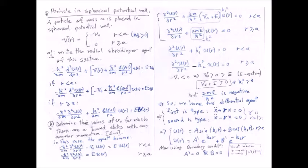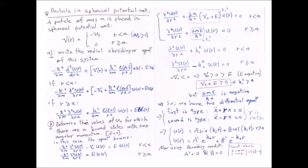For l = 0, the Schrödinger equation for r < a is written as: -ℏ²/2m · d²u(r)/dr² - V₀·u(r) = E·u(r), which rearranges to d²u(r)/dr² + (2m/ℏ²)(V₀ + E)·u(r) = 0. For r ≥ a, it becomes: -ℏ²/2m · d²u(r)/dr² = E·u(r), or d²u(r)/dr² + (2m E/ℏ²)·u(r) = 0.